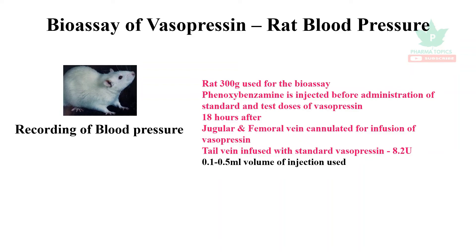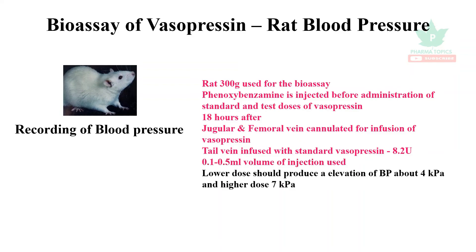Maximum volume is 0.1 to 0.5 mL. At dose level 1, the lower dose shows elevation of dP maximum. At 4 units there is an increase; at the higher dose, 7 units gives 2 units response; at 10 units, dose level 1, load 0.1.